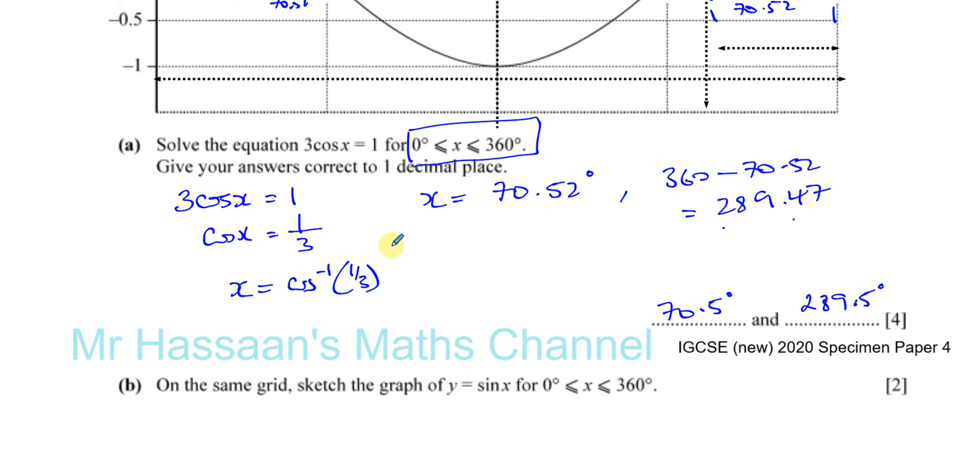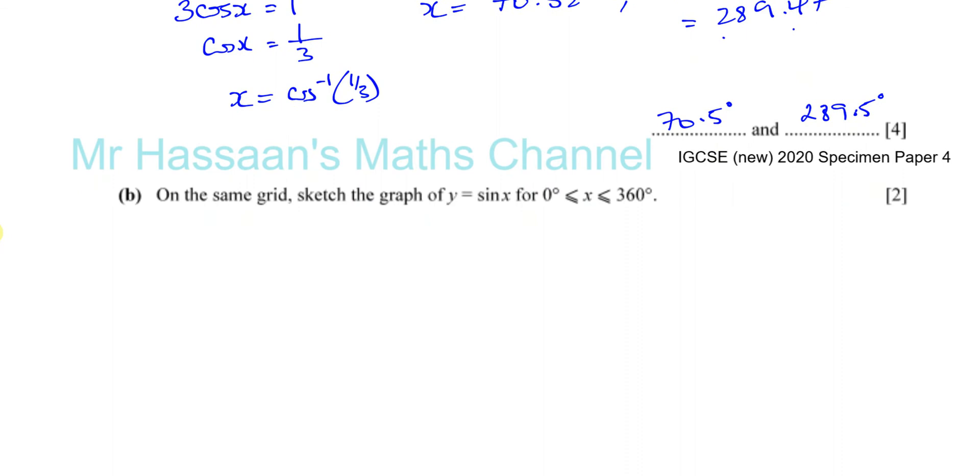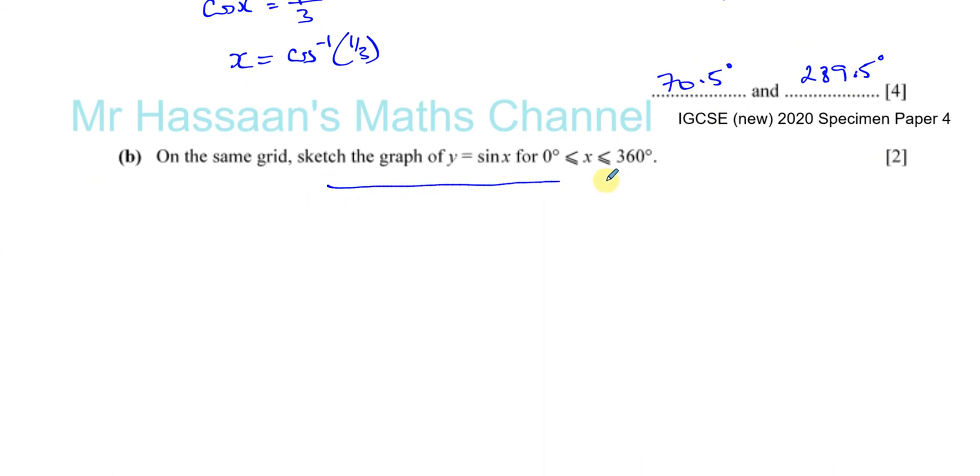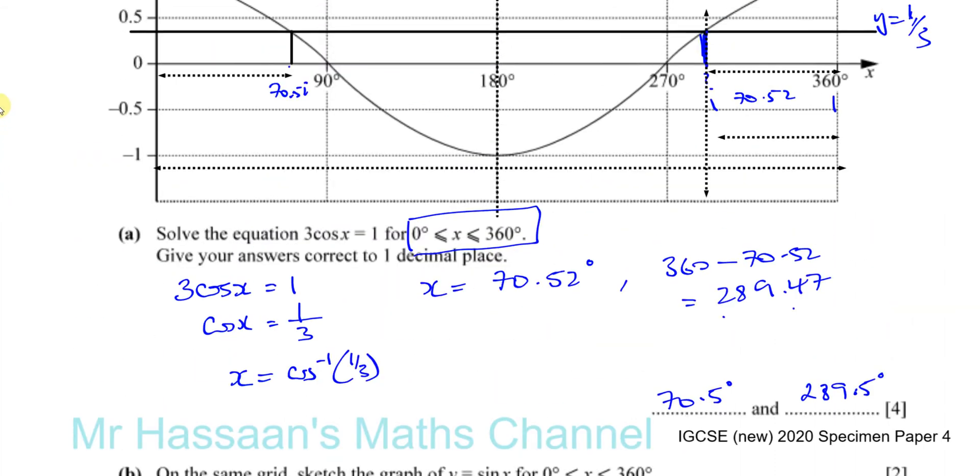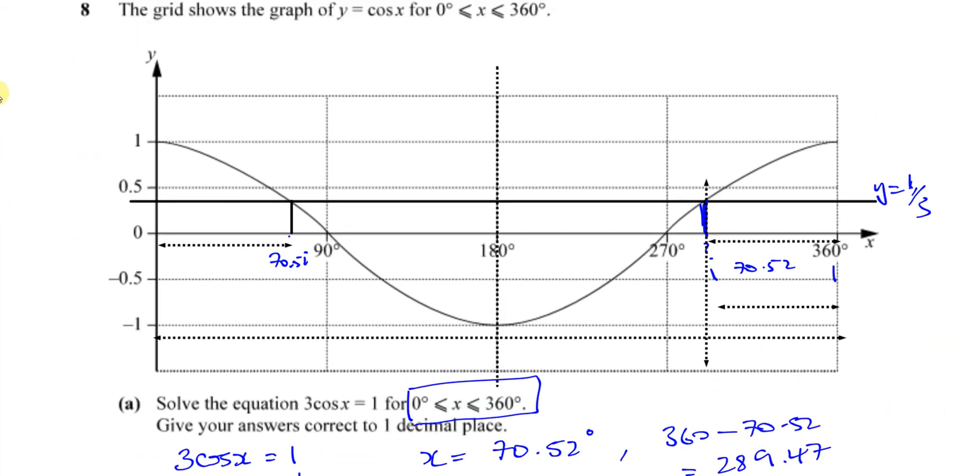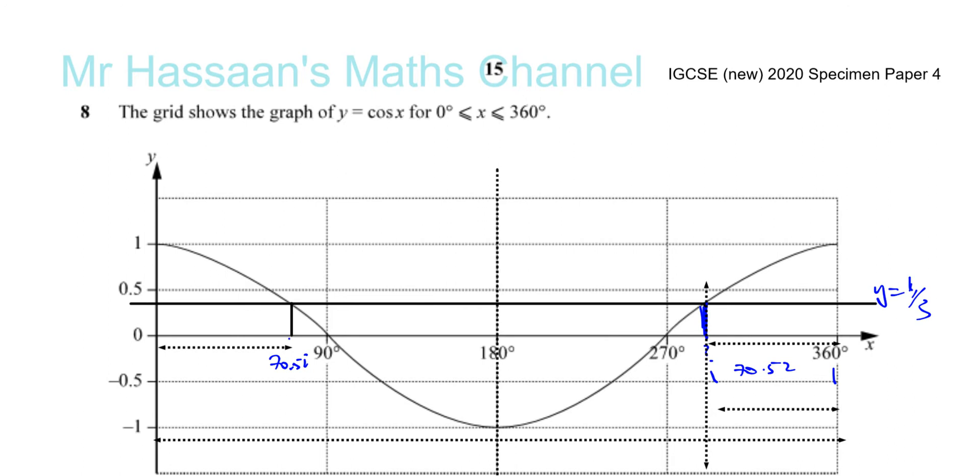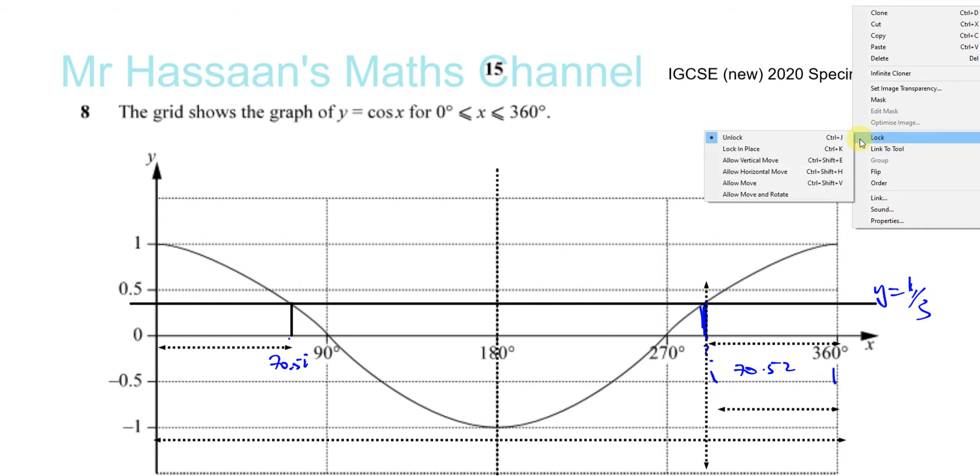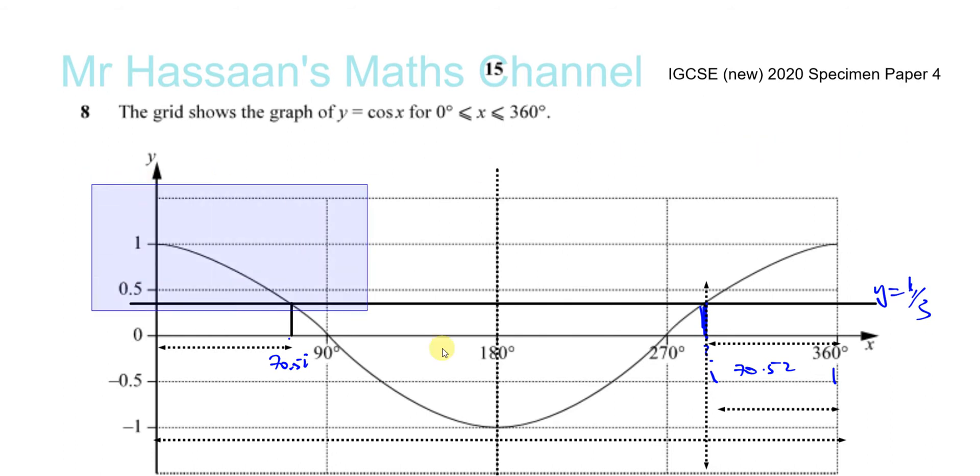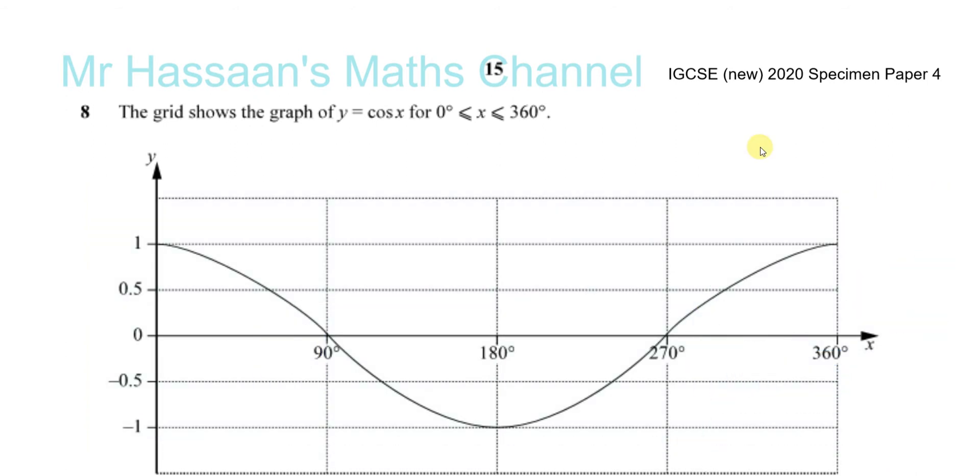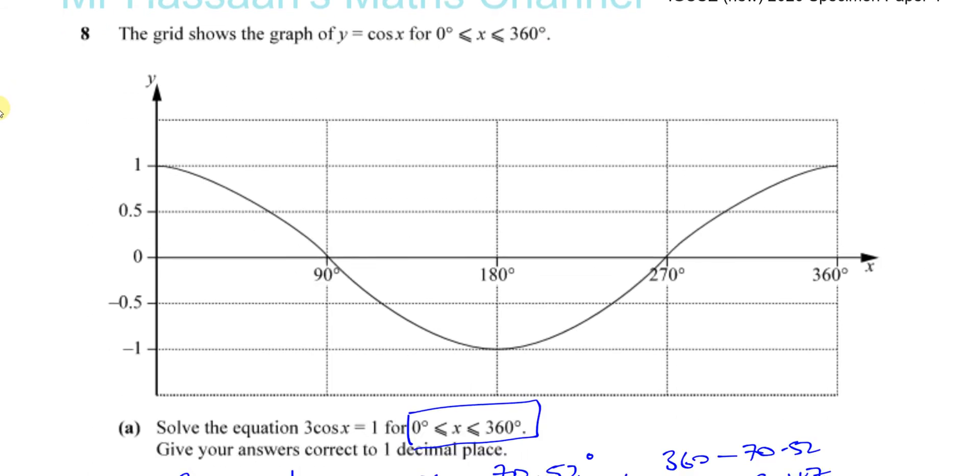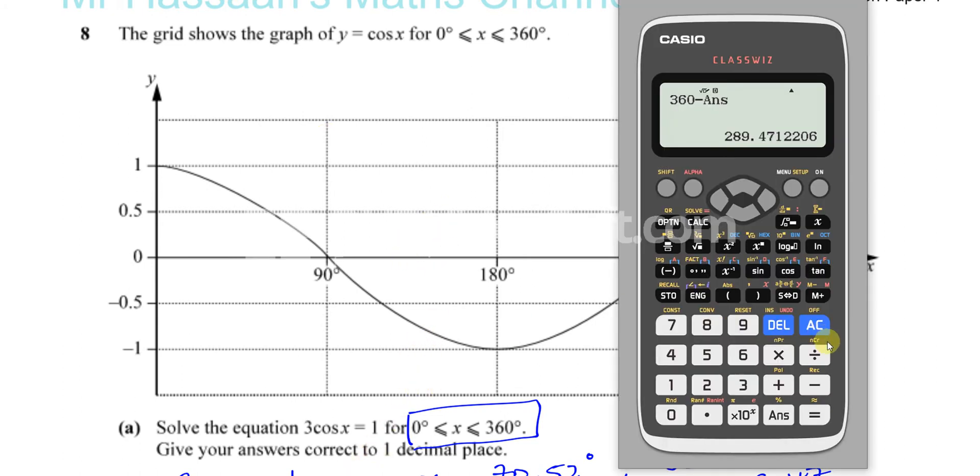For the sine curve, I'll first draw the sine curve and explain what happens with the sine curve. It says on the same grid, sketch the graph of y equals sine x for the same values. So now we've got to draw on this grid the graph of y equals sine x. What I'm going to do is I'm going to get rid of some of these things that I've already drawn there so that it doesn't get in the way.